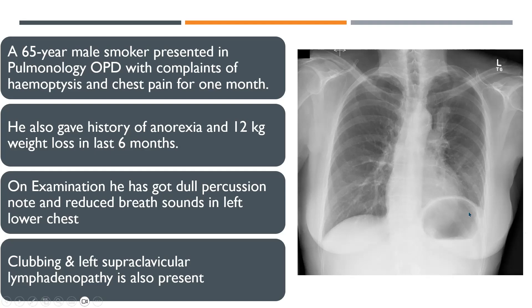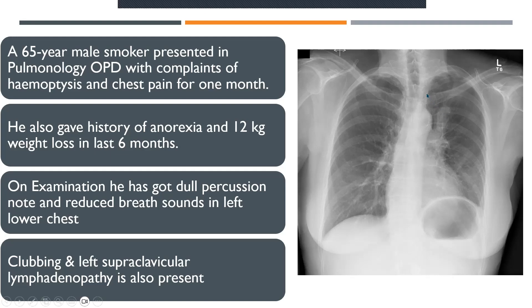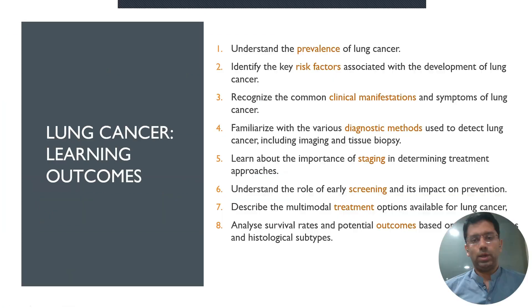On the X-ray, you can see there is lymphadenopathy or hilar prominence. There could be a mass at the left hilum, which has resulted in phrenic nerve paralysis. You may recall from your anatomy that the phrenic nerve passes through the hilum, and this has resulted in paralysis of the left diaphragm. So this is a case of lung cancer.